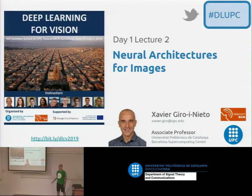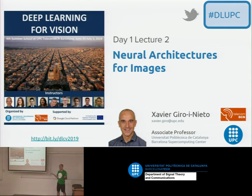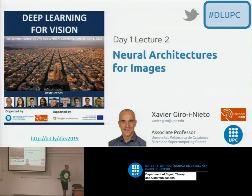We'll start now with this first lecture. This is a summary of things you might have heard about, because normally when you learn about deep learning, the classic application people look at is vision. I will try to answer the question: if I know about deep learning and I want to solve computer vision problems, especially analyzing images, what kind of architectures are most commonly used?